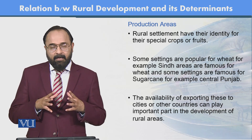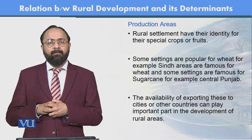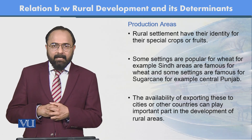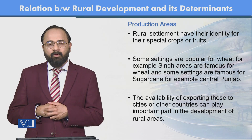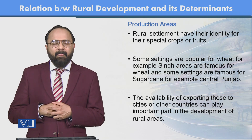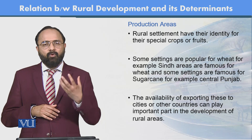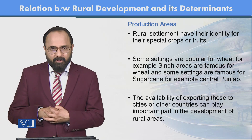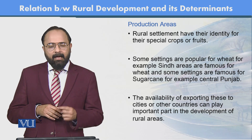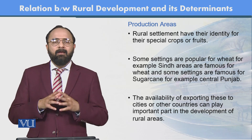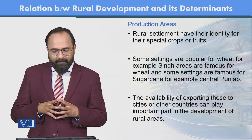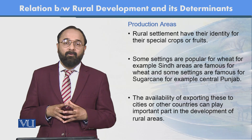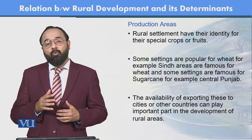ہر area اپنی production کی speciality کے لیے famous ہے — جیسے سرگودہا citrus کے لیے، southern Punjab اور Sindh mango کی production کے لیے، کچھ cotton production areas ہیں، کچھ rice production areas ہیں، کچھ wheat production areas ہیں۔ ان areas سے city یا دوسرے ممالک کو export کرنے کی availability rural development میں important part play کرتی ہے۔